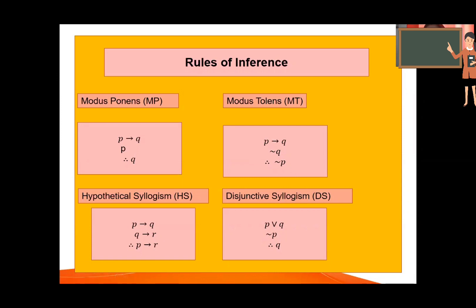Next we have hypothetical syllogism. P implies Q, Q implies R, therefore the conclusion P implies R. P implies R is the conclusion — P implies Q, Q implies R, therefore P implies R. That's hypothetical syllogism.